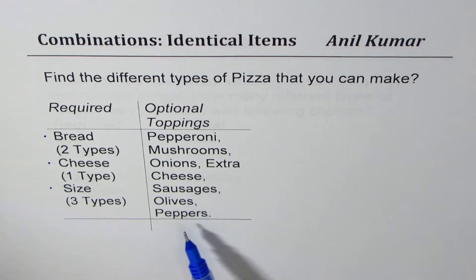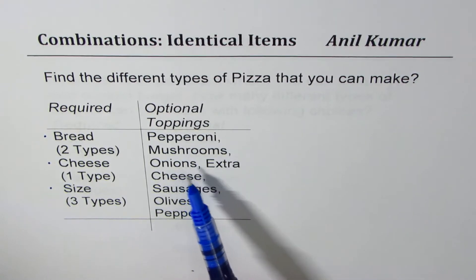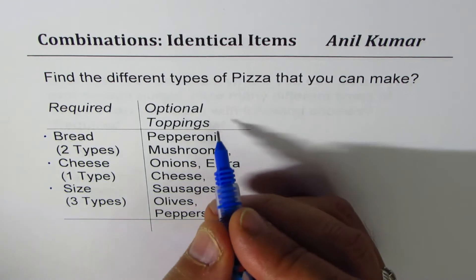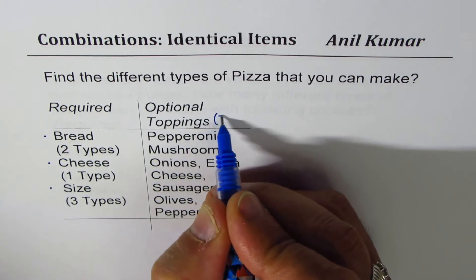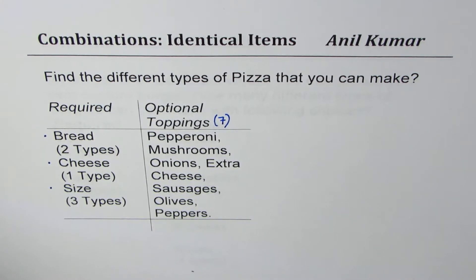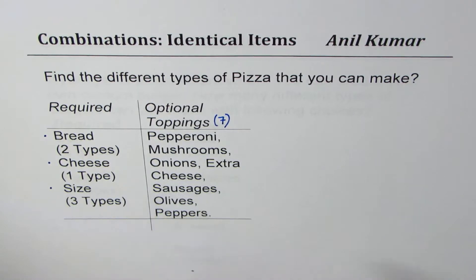On the optional side, the toppings could be pepperoni, mushrooms, onions, extra cheese, sausages, olives, or peppers — so we have seven toppings. Now you have to figure out how many different types of pizzas can be prepared with such a combination. Here is my thought about it.